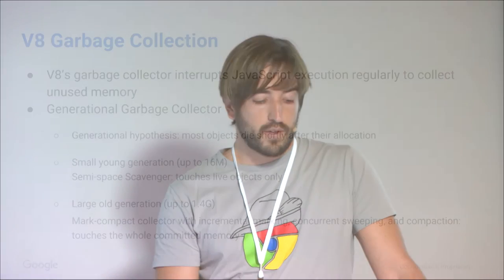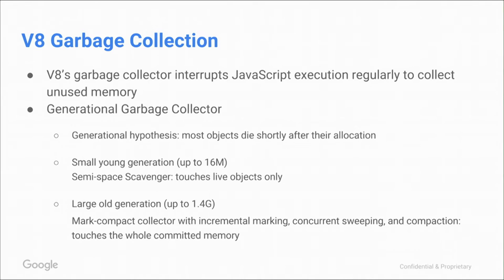How does garbage collection work in V8? The V8 garbage collector regularly interrupts JavaScript to free up unused memory. We implement the generational garbage collection architecture, which is very common in virtual machines. It's based on the hypothesis that most objects die shortly after they are allocated. We have a relatively small young generation — it can be up to 16 megabytes — and it uses a semi-space scavenger that basically only touches live objects. If the hypothesis holds, these young generation collections will be really short and efficient, usually not taking more than a millisecond.